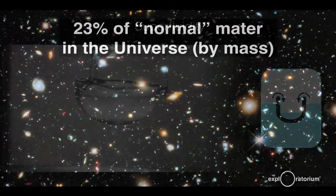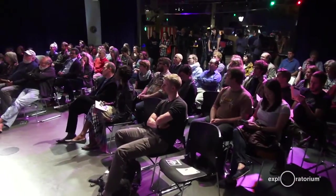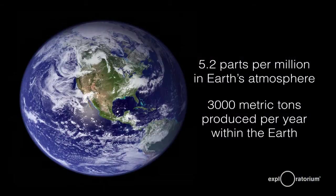Helium makes up about 23 percent of normal matter — and I put quotes around 'normal' because we're talking about baryonic matter, atoms and things like that in the universe. We don't know about dark matter, which makes up about 95 percent of the universe, but of the remaining five percent, helium makes up 23 percent of it, and most of the other 77 percent is hydrogen. On Earth, even though it's 23 percent of normal matter in the universe, in our atmosphere it's only 5.2 parts per million — compare that to carbon dioxide, which is about 400 parts per million.